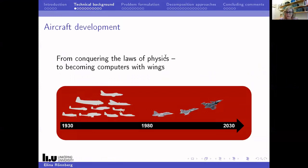Putting this work in some perspective: human attempts to fly trace far back in history, and it was not until the early 1900s that powered flights were successful. The Wright brothers became famous for their first flights. Saber Aeronautics was an early contributor to constructing aircraft. During what can be called the mechanical era, between the mid-1930s and mid-1960s, new models were produced every third year — essentially producing a new aircraft every time you wanted to change something.